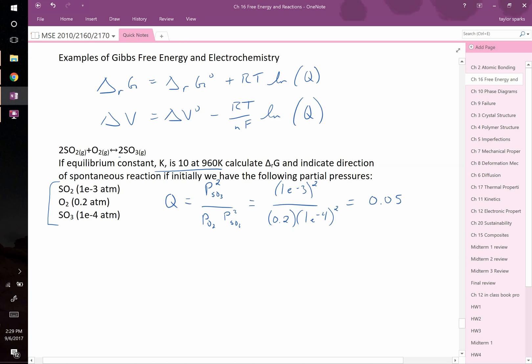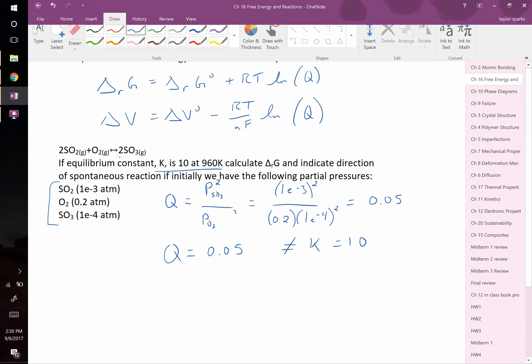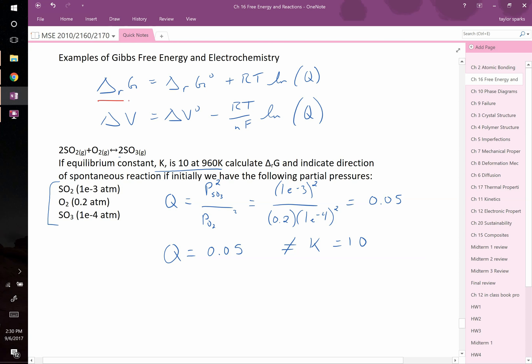When I plug those values in, I get that Q is equal to 0.05. Because Q is equal to 0.05, but it is not equal to K, which equals 10, we know that we are not at equilibrium. Therefore, the reaction will go either forwards or backwards. So how do we figure out whether it goes forwards or backwards? To answer this, we need to solve for delta RG. If it's negative, then the reaction goes forwards as written, and if it's positive, it's going to go backwards as it's written.